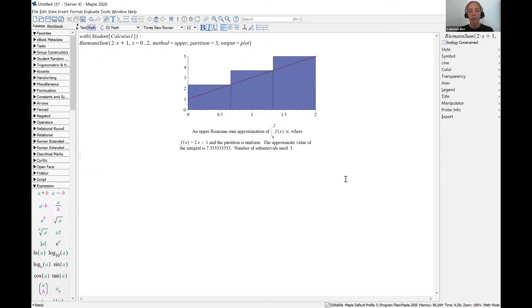We can see that down below the plot there's a caption, and it says the approximate value of the integral is 7.3 repeating, and the number of subintervals used was 3.